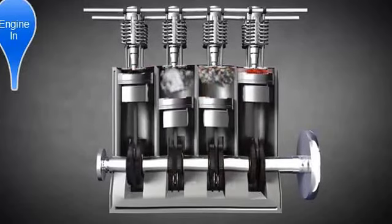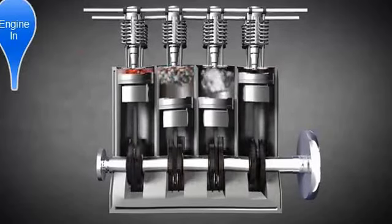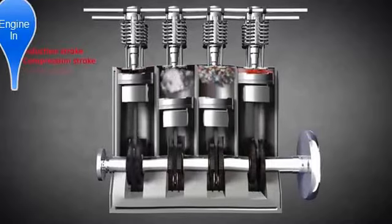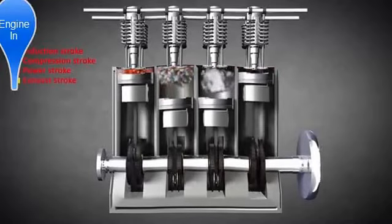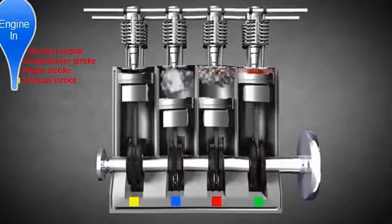A four-stroke diesel engine has the same strokes as an Otto-cycle engine: induction stroke, compression stroke, power stroke, and exhaust stroke.